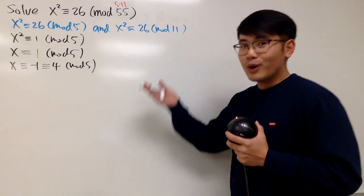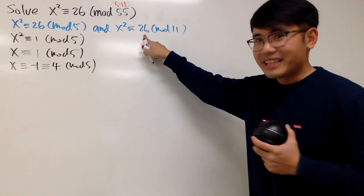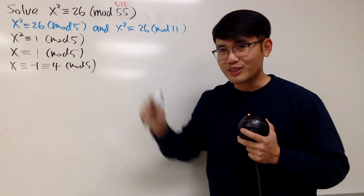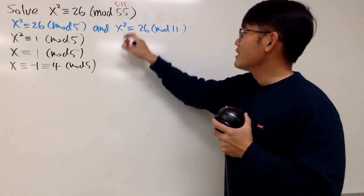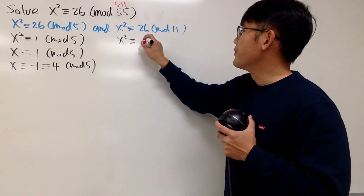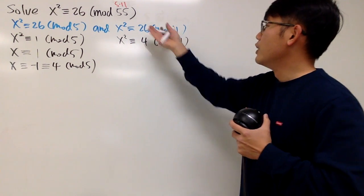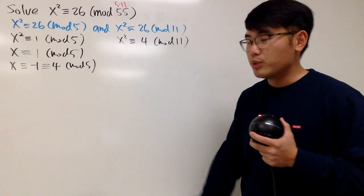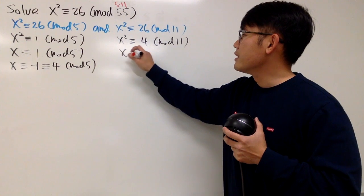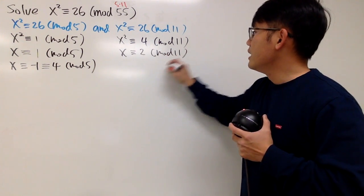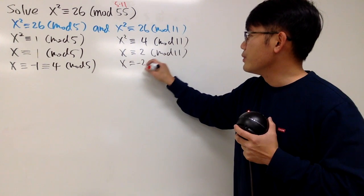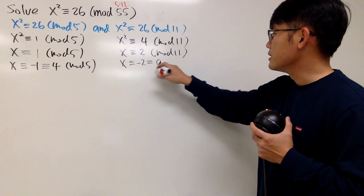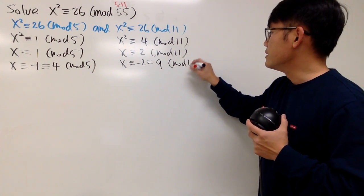On the other hand, we do the same for the mod 11 case. This right here is 26, and 26 is congruent to 4 mod 11 — since 26 divided by 11 gives remainder 4. So now x squared is congruent to 4 mod 11. This is also solvable. We can take the square roots, giving x congruent to 2 mod 11, and the other solution is x congruent to negative 2, which is the same as congruent to 9 mod 11 — you just add 11 to negative 2.